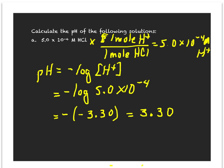Note that the hydrochloric acid concentration was given to two significant figures, and so the log answer should be to two significant figures. But in a log number, it's only the numbers after the decimal point that are significant. So this has two significant figures, and this also has two significant figures, for those that are paying attention to significant figures.